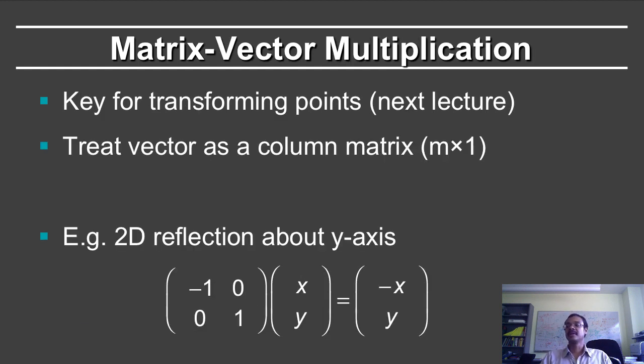Matrix vector multiplication is key for transforming the points, and this is the main topic we will be treating in the next few lectures. We can treat the vector as a column matrix, m rows times 1 column. And just as a simple example, I've shown you 2D reflection about the y-axis.